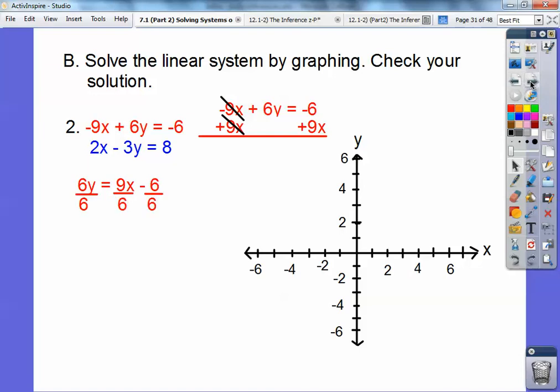So I'm left with 6y equals 9x minus 6. Then I'm going to divide everything by 6. And the 6s cancel. And then same over here. The 6s cancel. And 3 goes into 9 three times. And 3 goes into 6 two times. So this is just left with y over here equals 3 halves x. And then this is just 1 right here. So y equals 3 halves x minus 1.